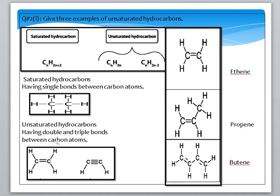Unsaturated hydrocarbons are those having double and triple bonds between carbon atoms. Carbon with double or triple bonds is called unsaturated, while carbon with all single bonds is saturated. Three examples are: first, ethene, with formula C2H4, which has one double bond between the carbon atoms.